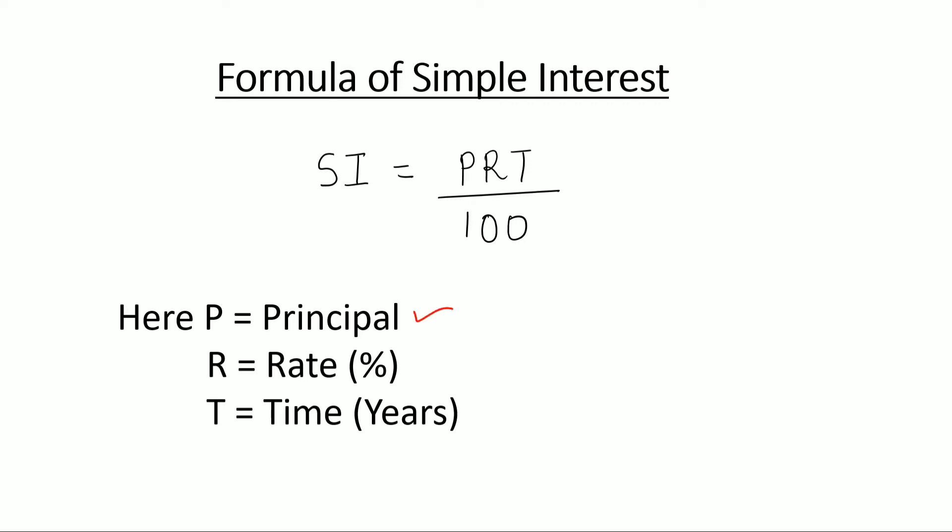Here P is the principal amount, R is the rate and T is the time.